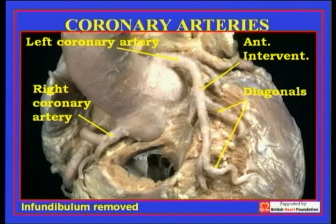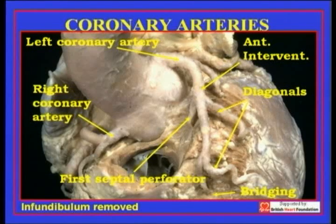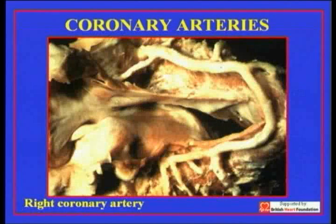Looking from the front, we can see the branches of the anterior interventricular artery. Taking off and moving towards the morphologically left ventricle, we see the diagonal branches of the anterior interventricular artery. Moving towards the plane between the right and left ventricle, we have the septal perforating arteries. In this particular heart, the predominant artery feeding the septum is the first septal perforating branch. Also visible at the base of the picture is another important point: so-called myocardial bridging, which occurs in approximately two-thirds of all normal hearts.